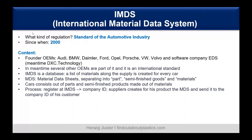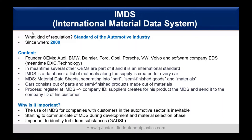The core of IMDS are the so-called MDS — Material Data Sheets — separated into three groups: parts, semi-finished goods, and materials. Cars consist of parts and semi-finished products made out of materials, and all are covered with MDS. The general process: you register in IMDS, get a company ID, and the supplier creates an MDS for their product and sends it to the customer's company ID — so the customer has all the information.